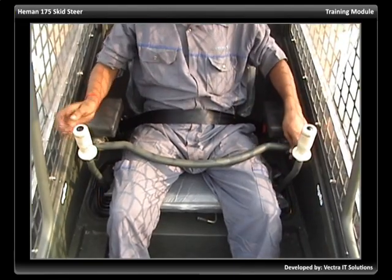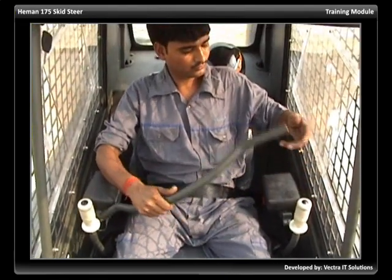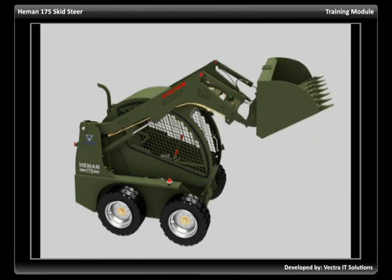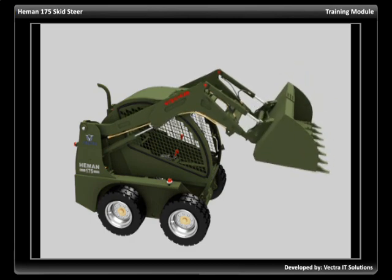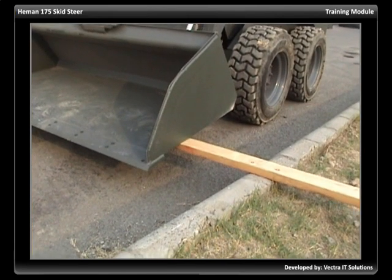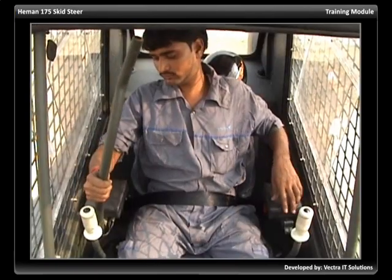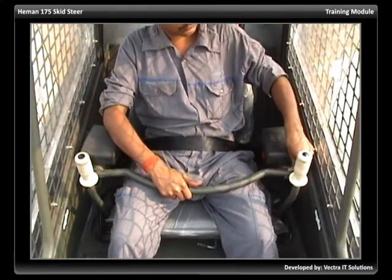The restraint bar is an important safety mechanism on your skid steer. When raised, it locks the spools of the valve block and prevents unexpected operation of the loader arm and bucket tilt mechanism. The arms and bucket present a potential crushing hazard when they are moving. The restraint bar should always be used and never modified.